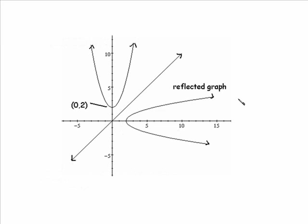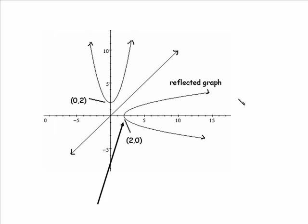The next thing that I would like to point out with this graph, if we took a look at the original, the point (0,2) lies on it. In fact, that's the vertex of the graph. And then on the reflected graph, that point (0,2) is going to transform to (2,0) on the inverse relation.